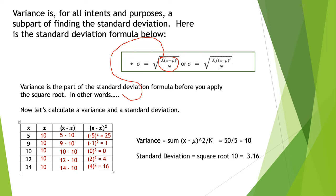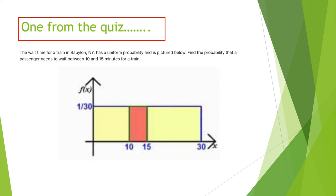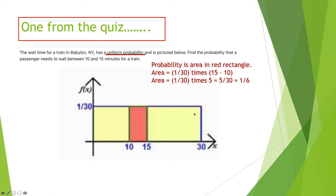All right. Next up, one question from the quiz. I went over the quiz grades. The quiz grades are excellent, but there was one question that had slightly more missed than other questions. The wait time for a train in Babylon, New York, has a uniform probability. That's, as soon as we hear uniform probability, that's the diagram of the rectangle. And it's pictured below. Find the probability that a passenger needs to wait between 10 and 15 minutes for a train. I want to emphasize uniform probability is so important in how we proceed and go about with this question.